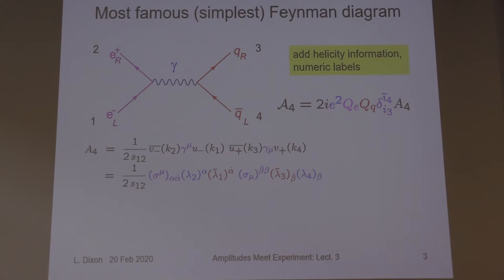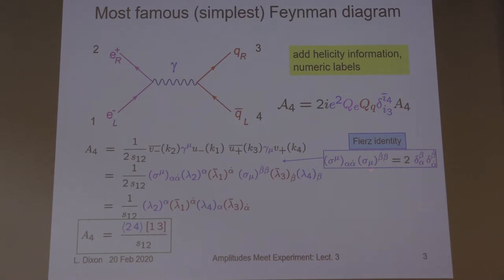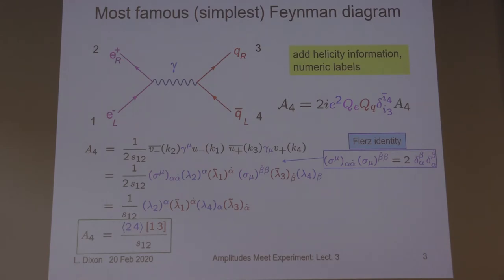The remaining color-stripped or electromagnetically-stripped amplitude is given by the product of the two electromagnetic currents after removing the quark charges — evaluated on these spinor states, it's just products of Dirac spinors and anti-spinors. In two-component notation this can be written in terms of two-component spinors and sigma matrices instead of gamma matrices. There's a simple Fierz identity which we use to finish up the contractions, so that lambda_2^α gets contracted with lambda_4^β, giving a spinor product [24]. Similarly we get the conjugate spinor bracket [13], and a 1/S_{12} for the propagator.